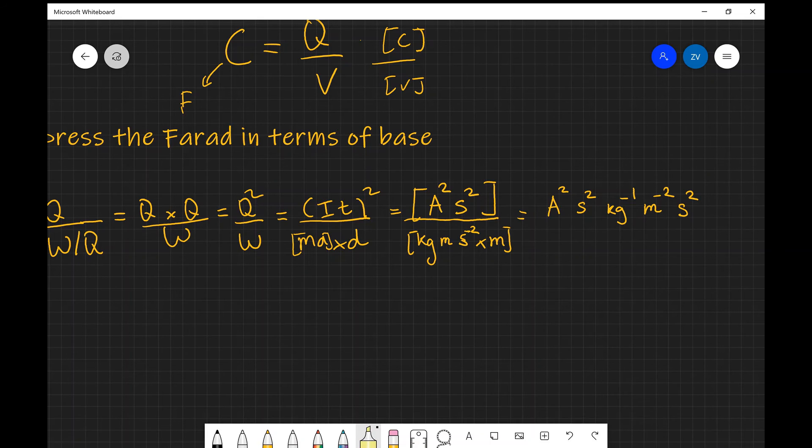I'm almost done. Just notice that I have s squared here and s squared there, which means I can combine those two. The base units of the farad are actually going to be amp squared, s to the power of four, kg to the power of minus one, meters to the power of minus two.